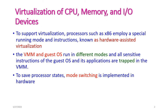The virtualization of CPU, memory, and I/O devices means we are going to virtualize the hardware devices. To support hardware virtualization, a processor should have a special running mode and a special set of instructions, known as hardware-assisted virtualization. This includes the instruction set architecture (ISA).